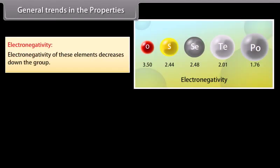Electronegativity: Electronegativity of these elements decreases down the group. Elements of group 16 are characterized by high electronegativity. Oxygen is the second most electronegative element after fluorine.